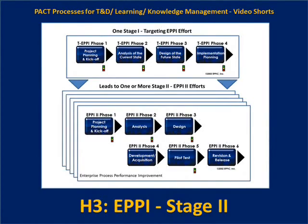A Stage 1 effort targeting EPI targets the interventions that are going to be necessary to get from the current state to the future state. The current state may be wrapped with problems that need to be addressed, or everything is just fine and we need to make improvements and do things even better. To get from the current state to the future state, we're going to need to change our processes, change the human enablers that will enable those future processes, and change the environmental assets that enable those processes.